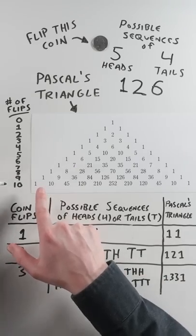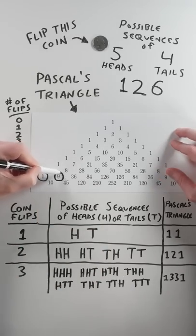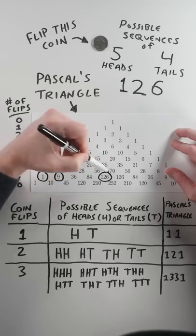So 9 coin flips can result in 1 outcome of all heads, 9 different outcomes of 1 head and 8 tails, all the way to 126 outcomes of 5 heads and 4 tails.